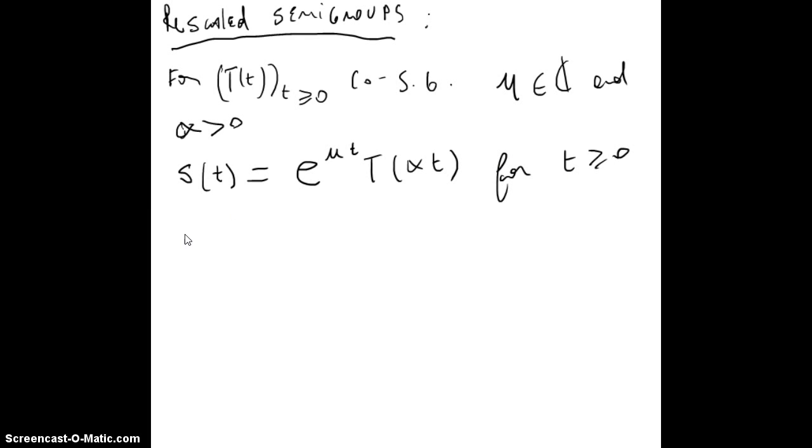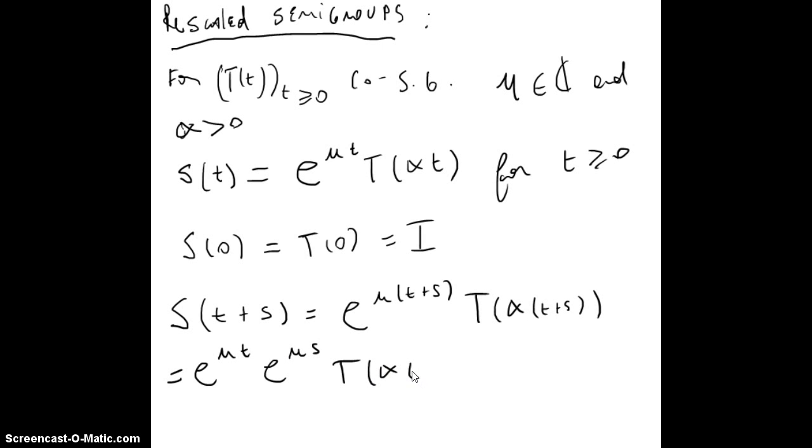You can see that S(0) is T(0), that is the identity, and S(t plus s) will be e^(μ(t+s)) T(α(t+s)), and this will be equal to e^(μt) e^(μs) T(αt) T(αs).